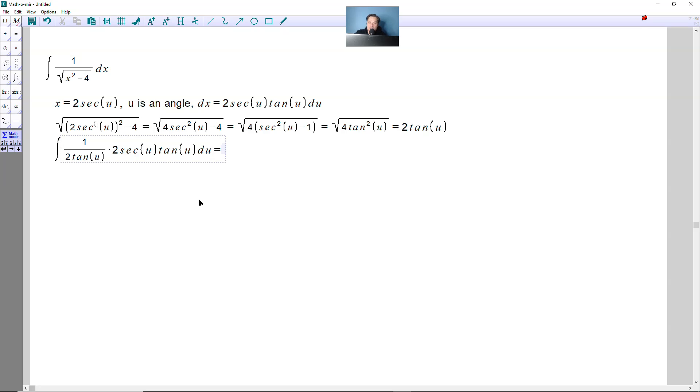Continuing here, I observe that the tangent parts and the 2's can be cancelled. So this is now just going to leave the following integral, which is actually very nice, just secant of u du.